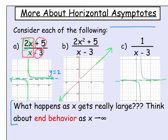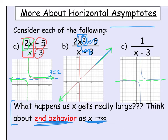In example B, the numerator has a higher degree — second power — than the denominator's first power. The plus 5 and minus 3 won't matter, leaving 2x squared over x. Since the numerator has a higher power, the entire fraction just keeps growing and going to infinity. That means there is no horizontal asymptote.